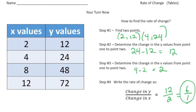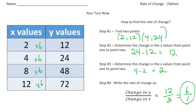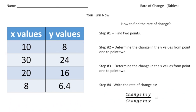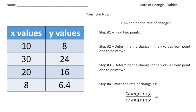You can verify: to go from 2 to 12 is times 6, from 4 to 24 is times 6, from 8 to 48 is times 6, and 12 times 6 gives 72. So the rate of change is 6 over 1.